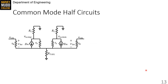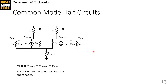The common mode half-circuit has to be analyzed differently. Since the input to either side is the same VCM and our structure is perfectly symmetrical, every voltage on the left side must equal the voltage on the right side. That means we can short the left and right output nodes together without changing anything about our analysis. The same is true for the two inputs and any other matched nodes. Once we've shorted all these nodes, we can simplify our circuit quite a bit to find the common mode half-circuit.